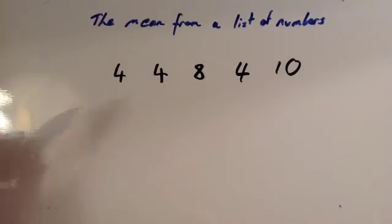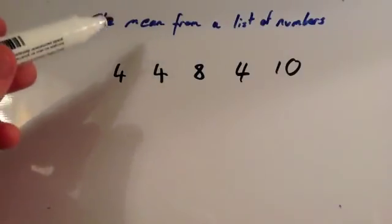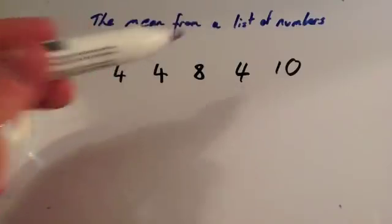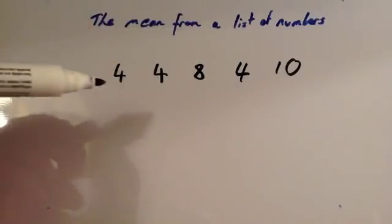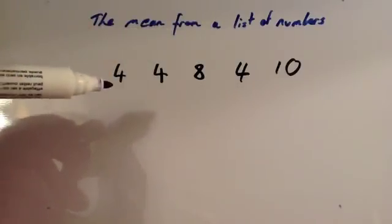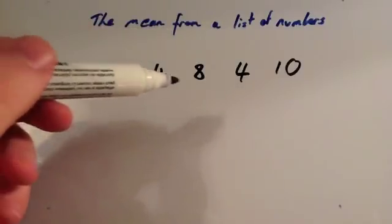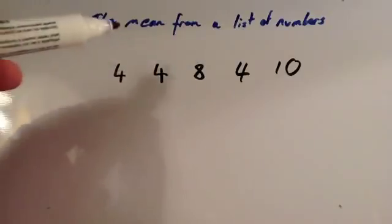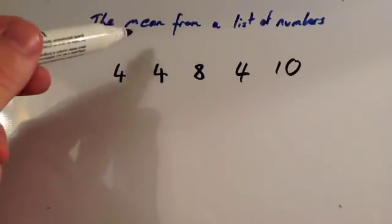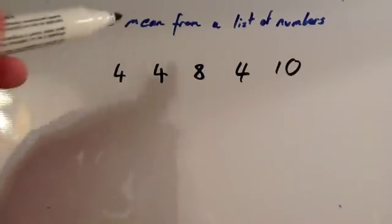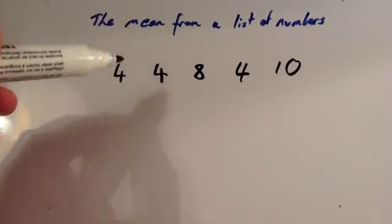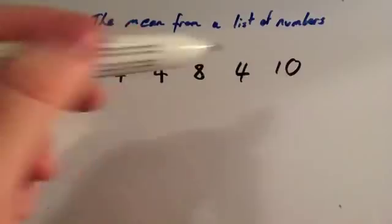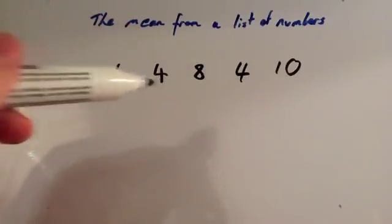We're now going to look at how to find the mean for a list of numbers, or a set of numbers. So we've got five numbers here: 4, 4, 8, 4, 10. We're going to calculate the mean. To calculate the mean, you add up the values and divide by how many there are.